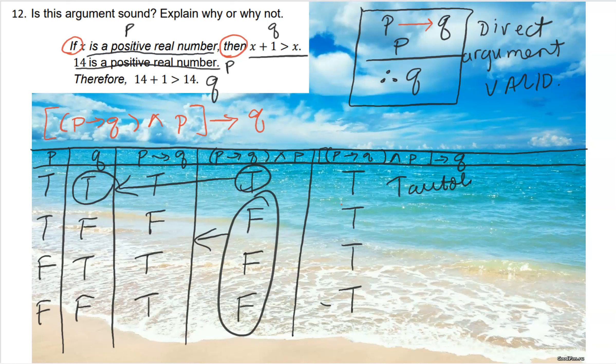So this is a tautology, so the argument is valid, just as we said, right? A direct argument is valid. So the question here though is asking: is it sound? Well, for an argument to be sound, the argument must be valid and the premises must be true. Now we know it's a valid argument; now we need to check to see if the premises are true.